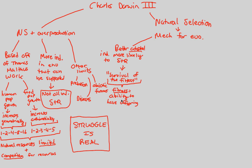Don't get that wrong on the exam — it's always a question. The survival of the fittest is about how many offspring you have. You are the most fit if you have the most offspring. Fitness is about how much offspring you can have.